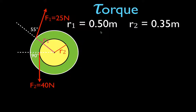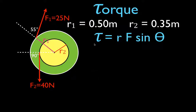We're going to calculate the torque produced by force one, the torque produced by force two, and add them up. We'll use the torque equation: tau equals r times F times the sine of theta.